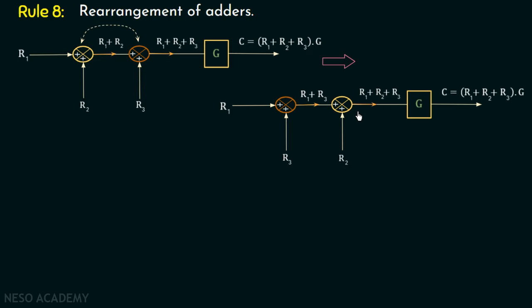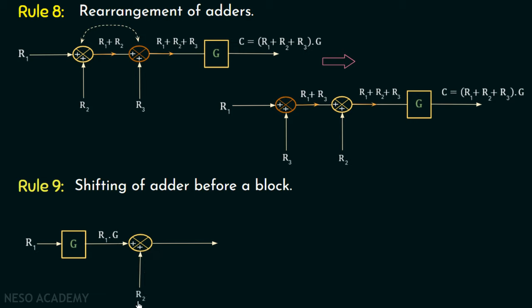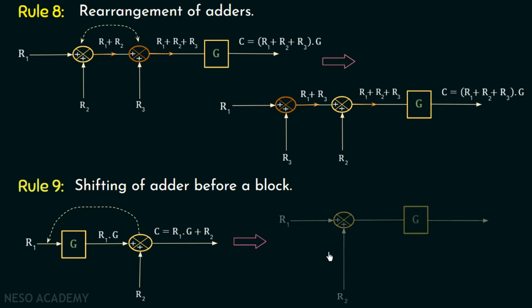We will now move on to rule number 9. Rule number 9 of block diagram reduction is based on shifting of an adder before a block. Consider this block diagram in which a block and one adder are present, and the adder is currently after the block. If the input to the block is r1 and the gain is g, the output is r1·g. If the second input to the adder is r2, then the output is c equal to r1·g plus r2.